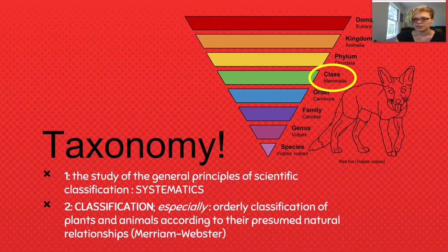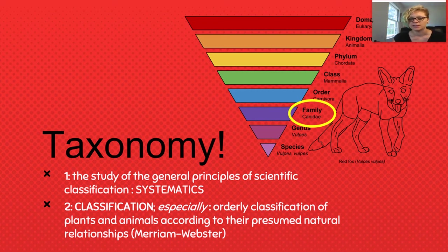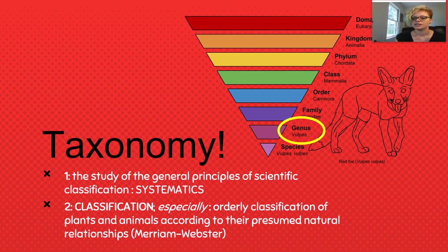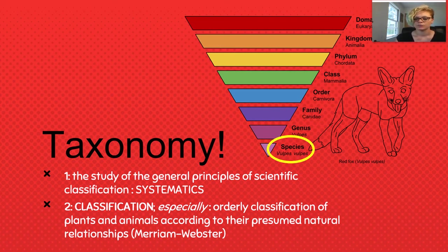Next the class Mammalia for mammal, then the order Carnivora for carnivore, and then foxes are in the Canidae family along with wolves, coyotes, dogs, etc. The genus Vulpes includes all the different kinds of foxes. Then the species name, which also happens to be vulpes, so the animal referred to as Vulpes vulpes is the red fox.